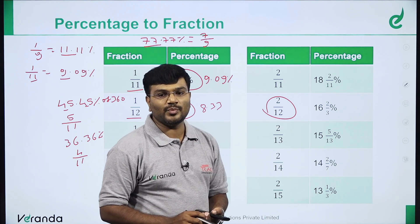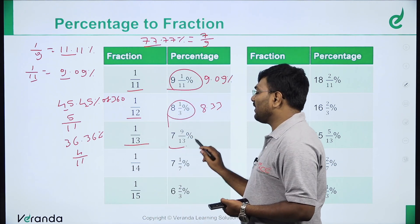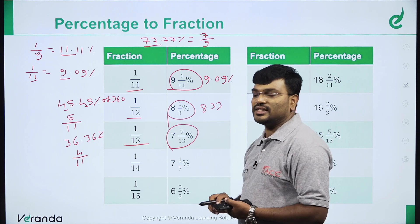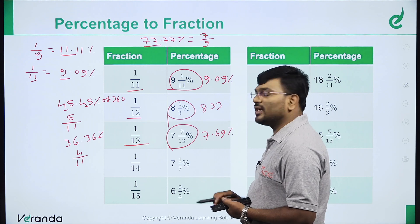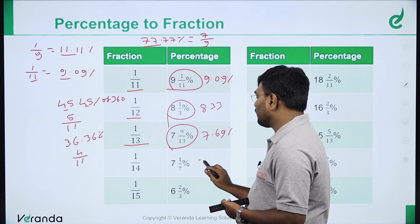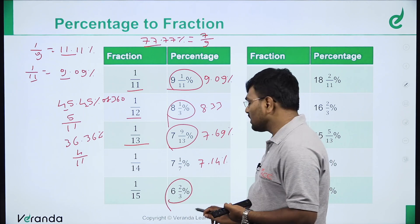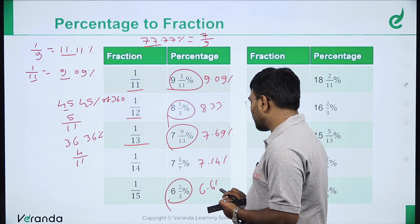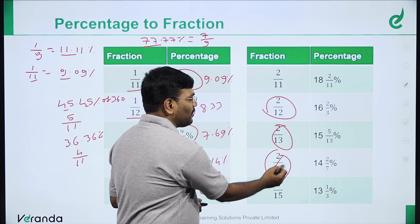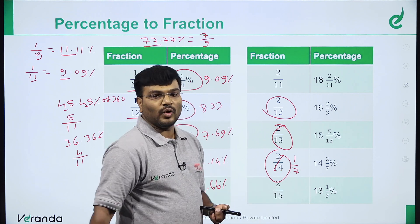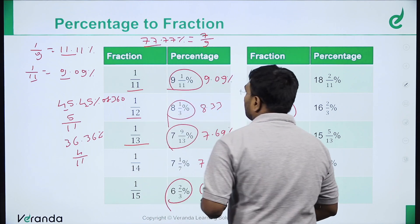77.77% — the numbers 7 repeating, so it is a multiple of 11 in numerator. 77 divided by 11 is 7, so 77.77% equals 7 by 9. When you see repeating decimals like this, the denominator is 9 and the numerator is found by dividing the repeating block by 11. For 1 by 12: 8.33%, same as 1 by 3 times pattern. 2 by 12 equals 1 by 6 which is 16.66%.